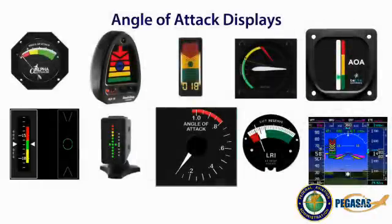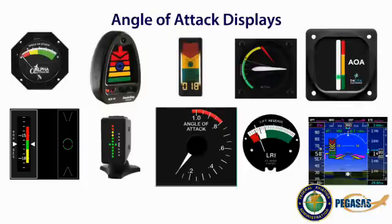Here are several examples of AOA displays. Different manufacturers will have different types of displays. How the AOA functions, i.e., the transducer or pressure system, also varies by installation and manufacturer. The main takeaway is that personal preference and aircraft compatibility are the primary considerations. It is important to familiarize yourself with a variety of angle of attack displays and select the one that suits your needs the best.